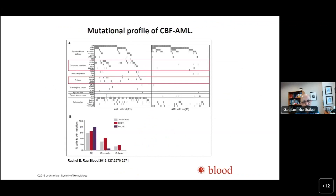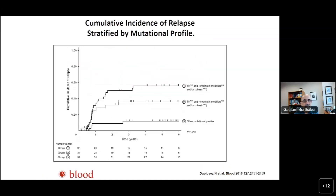When we say core binding factor AML, we bring both t(8;21) and inversion 16 under the same umbrella, but in essence these could be two very different diseases — outcomes are not necessarily similar. Relapses are possibly more frequent in t(8;21) than in inversion 16. Looking at the mutation profile, tyrosine kinase pathway mutations are similar in both, whereas chromatin-modifying mutations and cohesin mutations are much more frequent in t(8;21). In the graphical form, tyrosine kinase mutations are more frequent in inversion 16 and cohesin mutations more frequent in t(8;21).